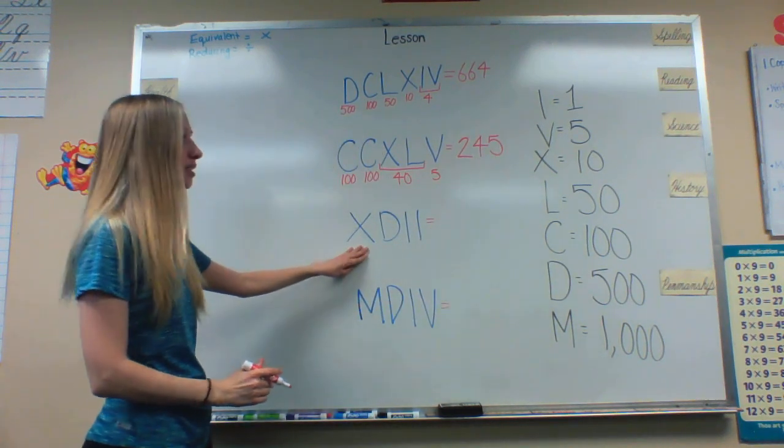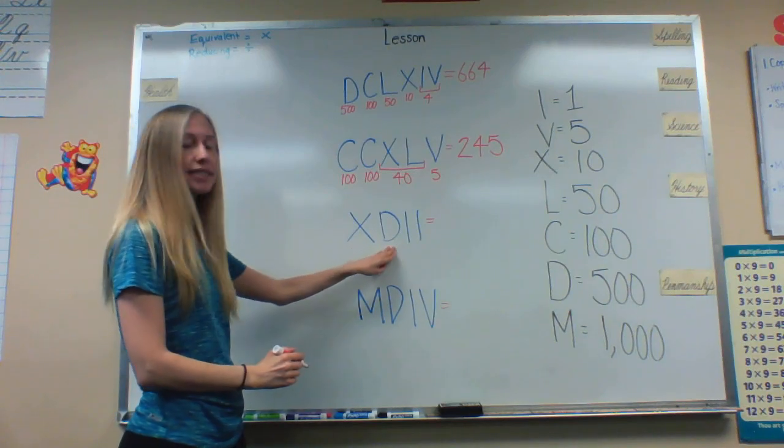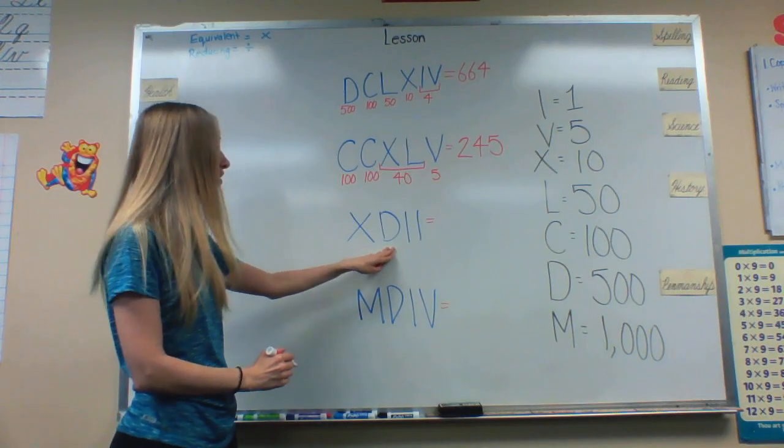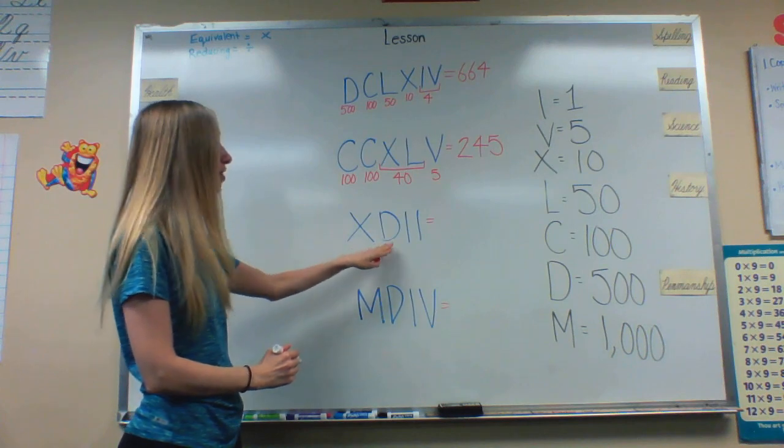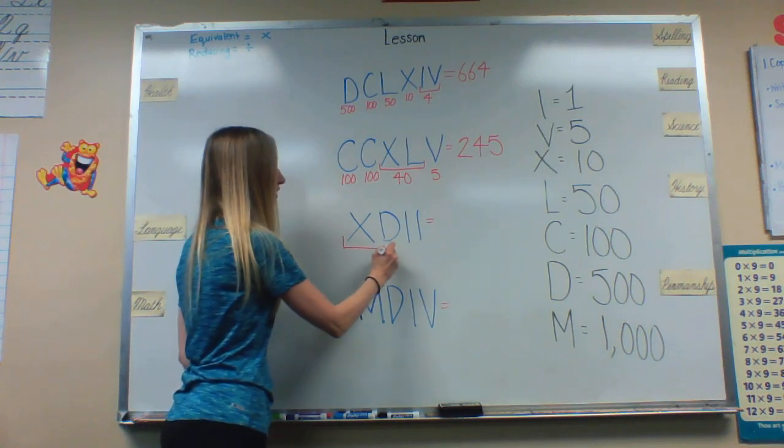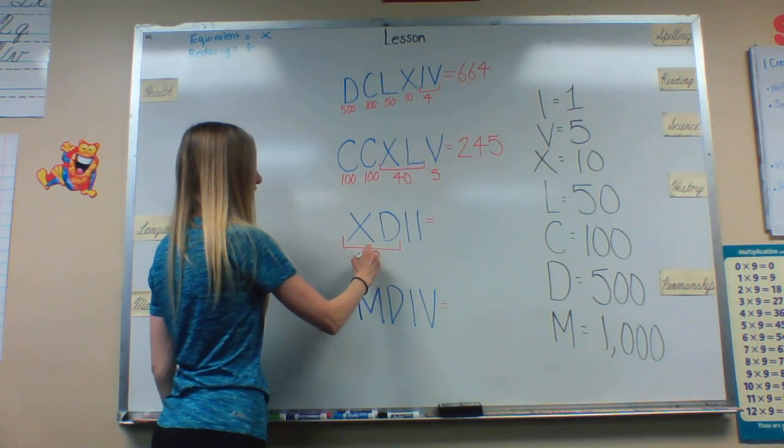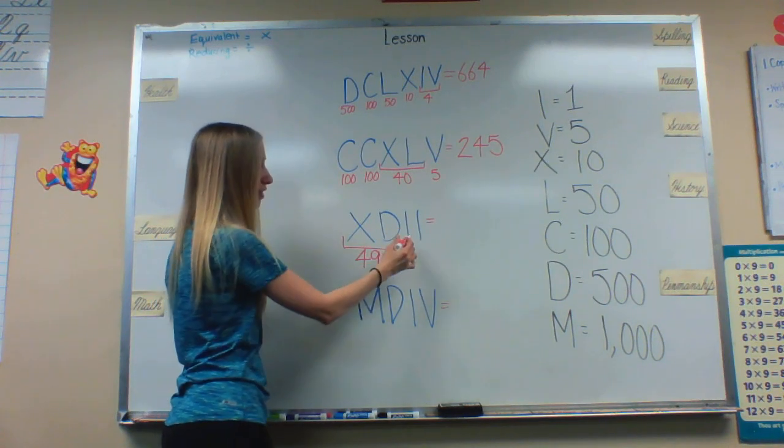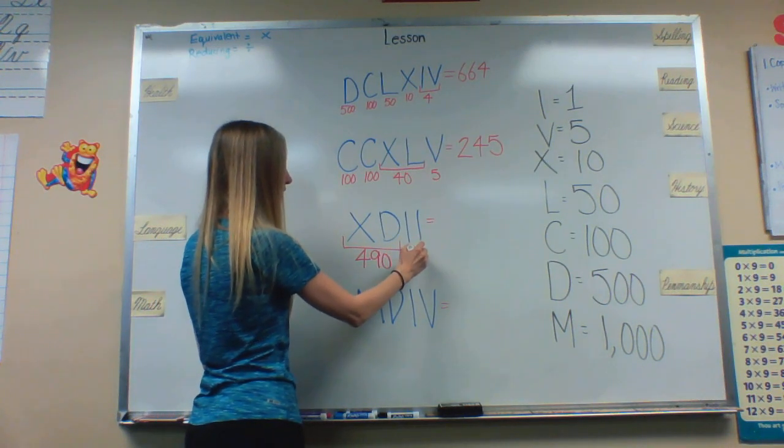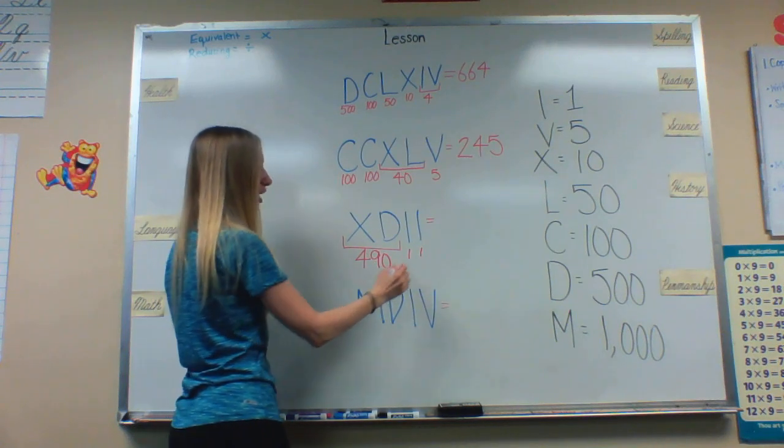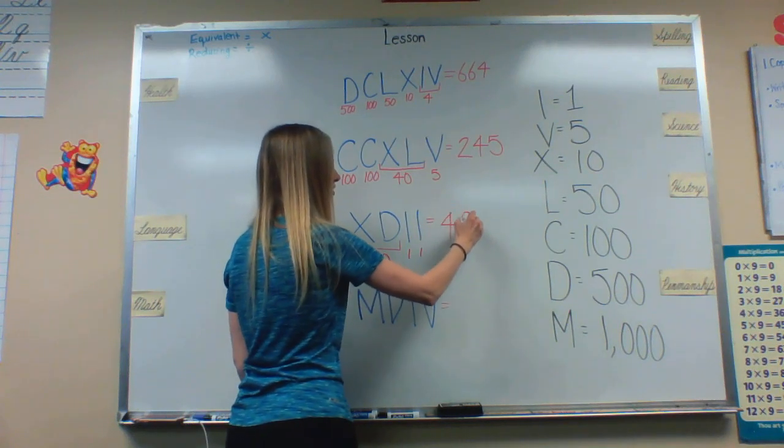Then we have X which equals 10. D equals 500. So we have a smaller Roman numeral before a larger one. So 500 minus 10 would be 490. And we have an I and an I which equals a 1 and a 1. So that would equal 492.